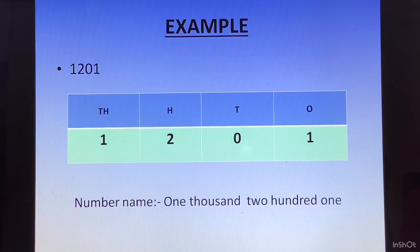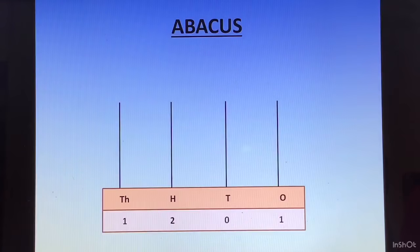Let us now make the abacus for this. The number was 1201. We will start with the ones column. On the ones spike we will put 1 bead. In the tens spike we will not put any bead as the number there is 0. We will go to the hundreds spike and there we will put 2 beads. In the thousands place we have 1, so we will put 1 bead on the thousands spike. This is the numeral's representation on the abacus.